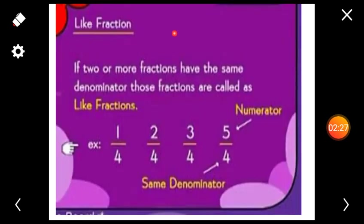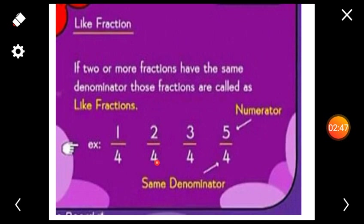Like fractions. If two or more fractions have the same denominator, those fractions are called like fractions. Look at these fractions: 1 by 4, 2 by 4, 3 by 4, and 5 by 4. In all these fractions, the denominators are the same — that is, 4. If two or more fractions have the same denominator, such fractions are called like fractions.